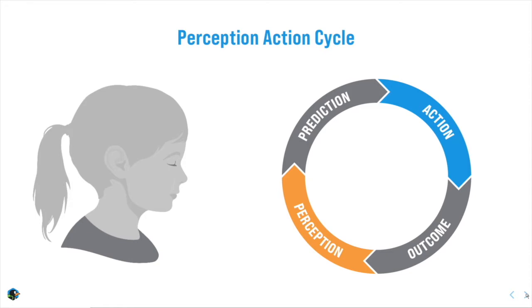So, let's have a look at what's happening here from a neuroscience perspective. It's called the perception action cycle.